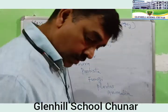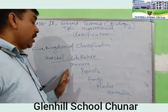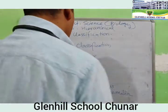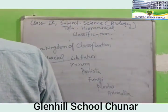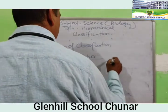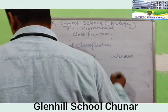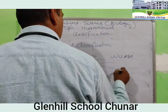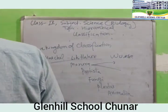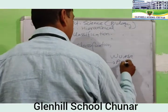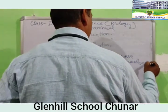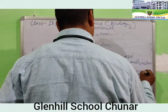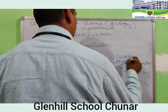Woese was the scientist who divided the Monera. Woese divided Monera into two groups: Archaebacteria and Eubacteria.